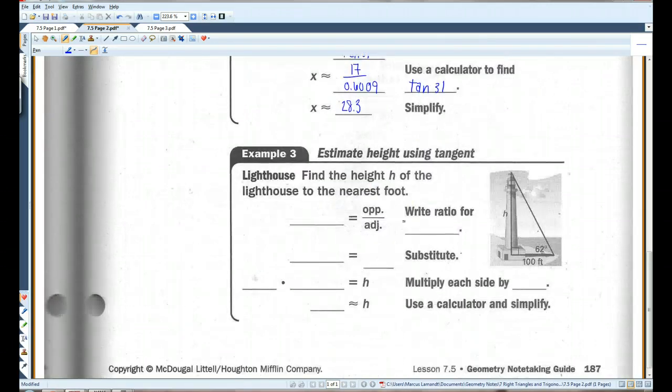Okay. Find the height h of the lighthouse to the nearest foot. Okay. So, here. If we're looking for the tangent of 62 degrees, it's opposite over adjacent. So, we're writing the ratio for tangent of 62 degrees. Tangent of 62 degrees.